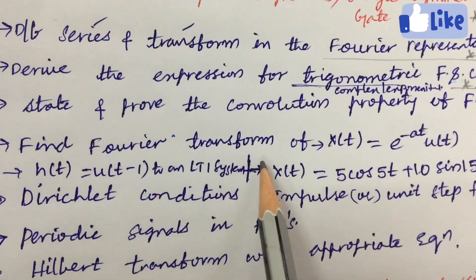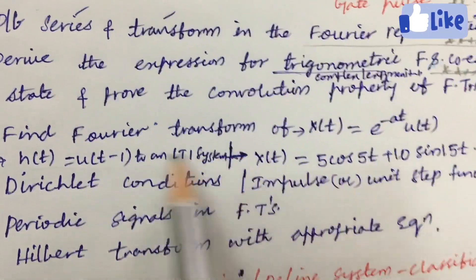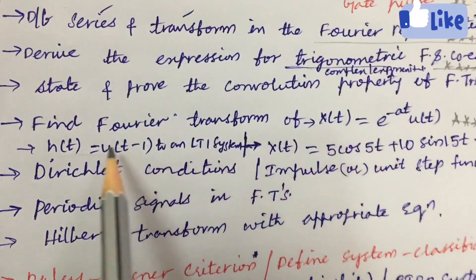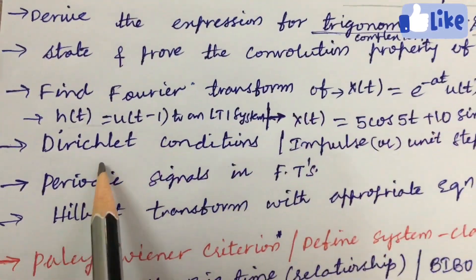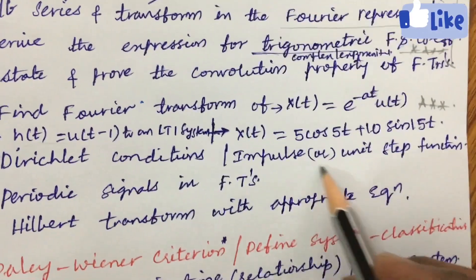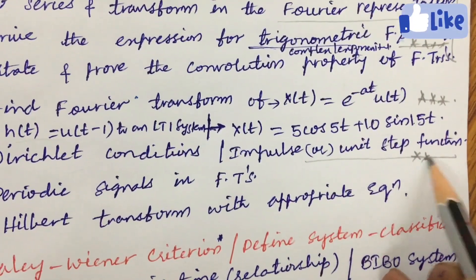Later find the Fourier transform where certain relations and the equations will be given you are supposed to work out certain concepts related to the Fourier transform. Next Dirichlet conditions as well as impulse or unit step function may be also one of the very very important question.